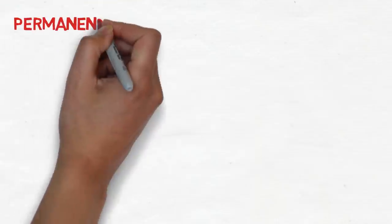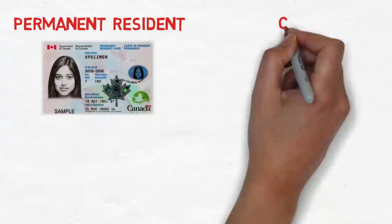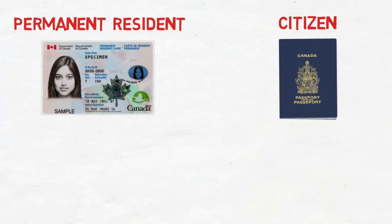If you are a permanent resident of Canada, you would hold a PR card, but if you're a citizen of Canada, you'd be holding the Canadian passport. As a permanent resident, you have to live there for a certain number of years and then pass an exam to become a citizen and get that passport. Please note that some countries do offer dual citizenship as well.